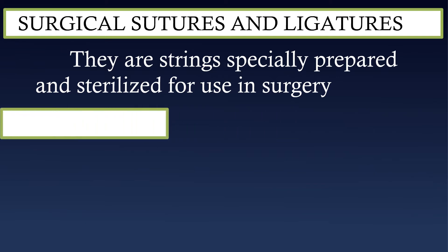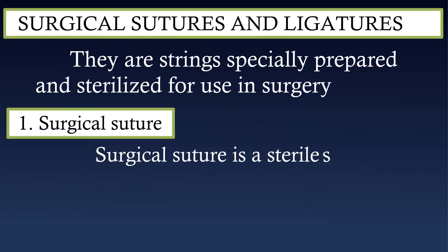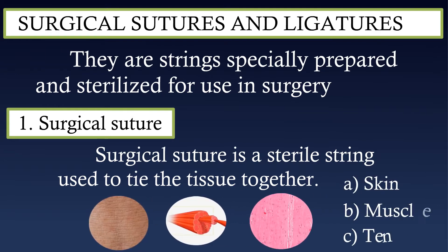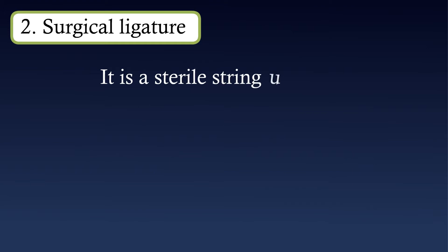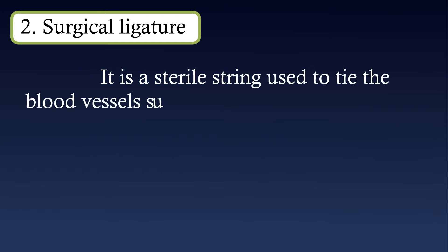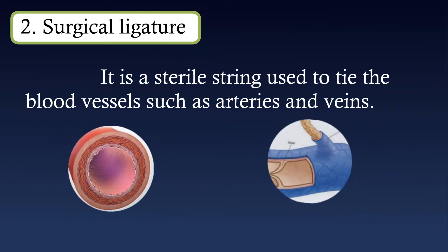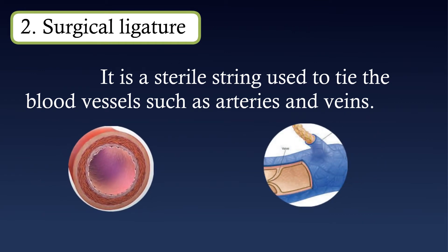Let's see what is a surgical suture. A surgical suture is a sterile string used to tie the tissue together, for example, skin, muscles, tendons, etc. Next, surgical ligature. It is a sterile string used to tie the blood vessels, such as arteries and veins.